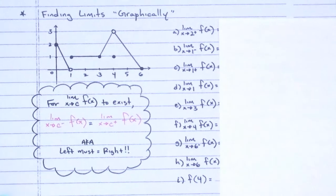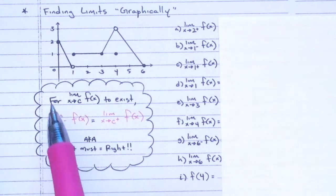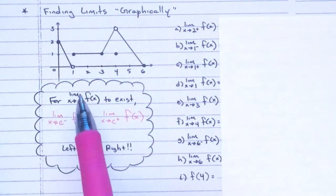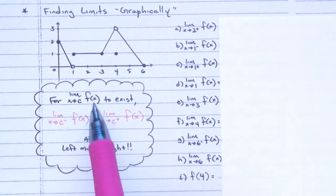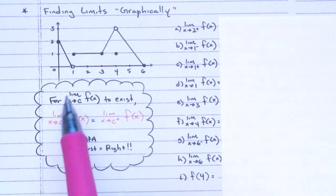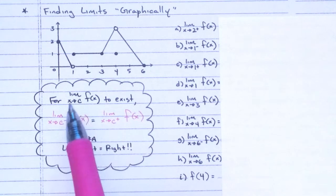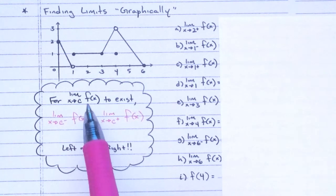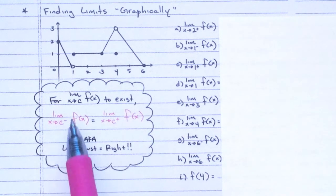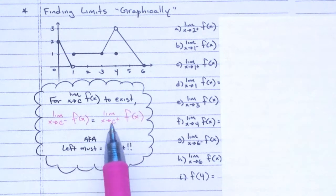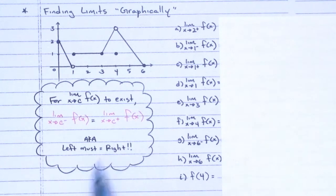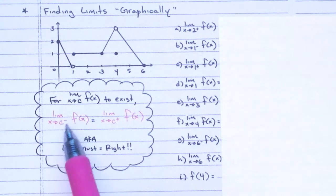For the limit as x approaches c of f(x) to exist, the left limit must equal the right limit. Make sure you understand and can say that correctly — not 'lim x arrow' — but 'the limit as x approaches c of f(x).' That's how you write a left limit and a right limit; the superscript minus or plus is not negative or positive c.